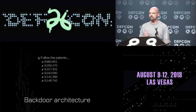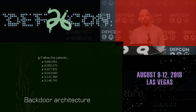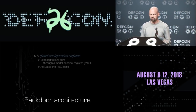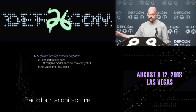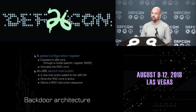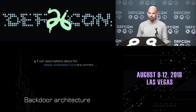Following this as a starting point for research is a really painful process. But if you're persistent it can pay off. I settled on six different patents with key ideas. One: VIA was embedding a non-X86 core alongside the X86 cores in their C3 processors — a RISC architecture I started calling the deeply embedded core, or DEC. They also talked about a global configuration register exposed to the X86 core through a model-specific register that can activate this RISC core.